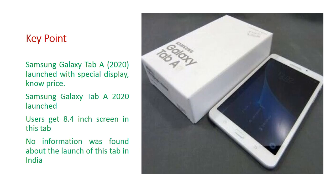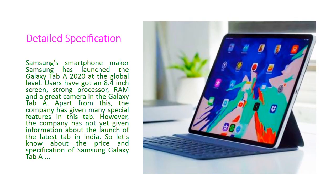Now the detailed specification of this Samsung Galaxy Tab A 2020. Samsung has launched this Galaxy Tab A 2020 at the global level. Users have got an 8.4 inch screen, strong processor, RAM, and great camera in this Galaxy Tab A. Apart from this, the company has given many special features in this tab. However, the company has not yet given information about the launch of this latest tab in India.